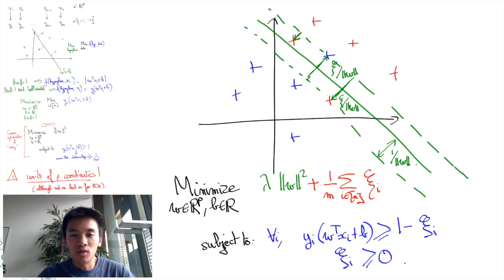so this is again to take into account how well the hyperplane separates the data, plus 1 over m times the sum of the xi i, so this is a term that adds up the errors that are made or the not very good separation that we have made.